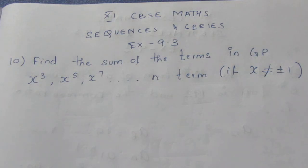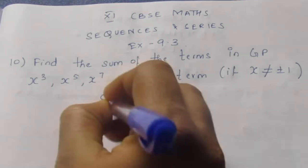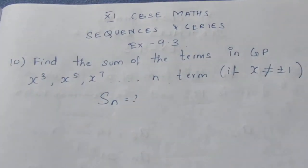Let us see the question: find the sum of the terms in GP. So we need to find the sum of terms, that is, the Sn value we need to find.